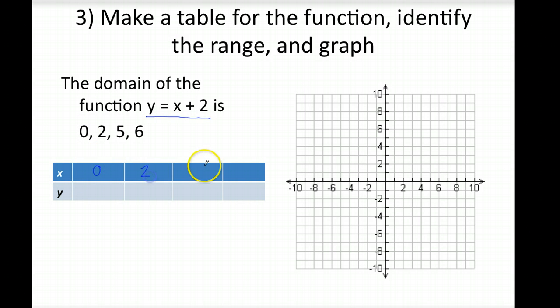So, it's 0, 2, 5, and 6. Then, to find the y values, we're substituting the x value in to get the corresponding y value. So, for this first one, our y value equals 0 plus 2, which is 2. And then, we get 2 plus 2, which is 4. 5 plus 2, which is 7. And 6 plus 2, which is 8.